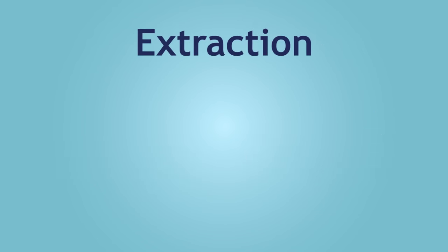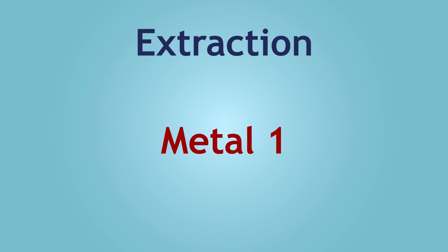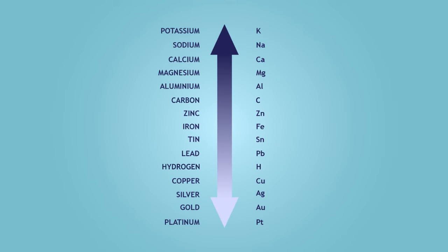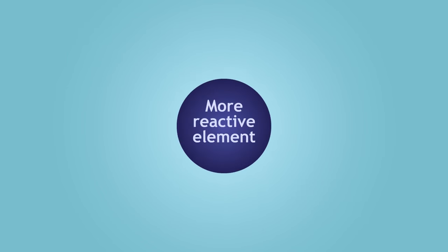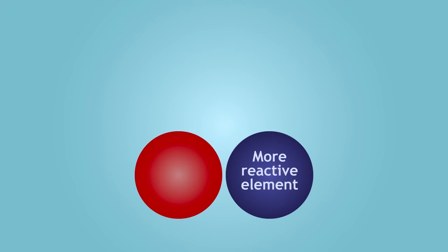Before we can extract a selected metal, we must first consider its reactivity by looking at the reactivity table. The most reactive metals are at the top of the series, and the least reactive are at the bottom. Although carbon and hydrogen are not metals, they are still included in the table for comparison purposes. A more reactive element can displace a less reactive element in a compound.